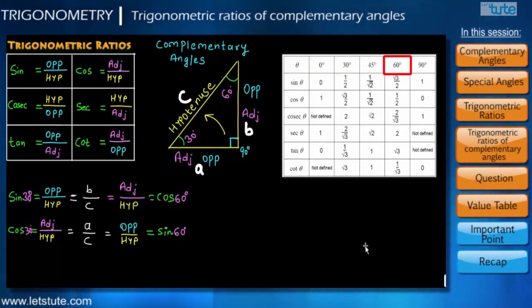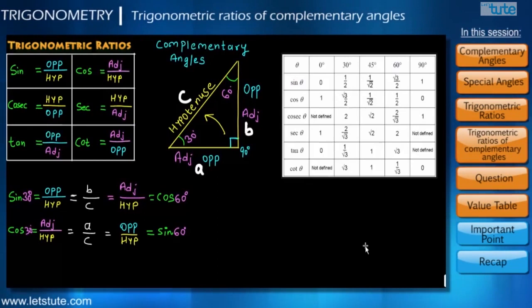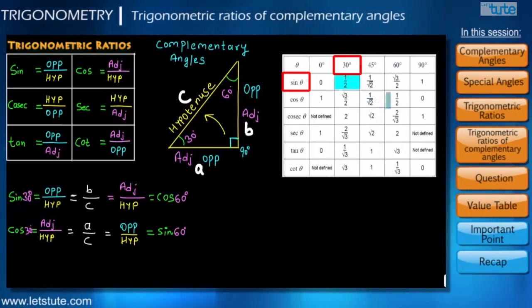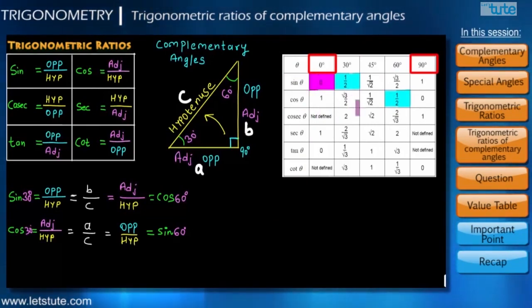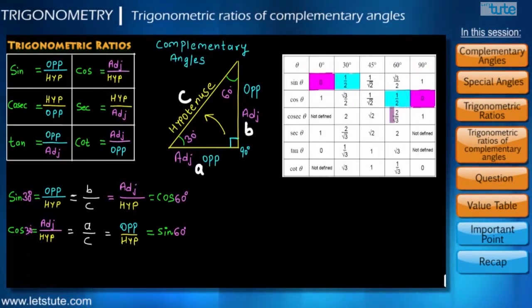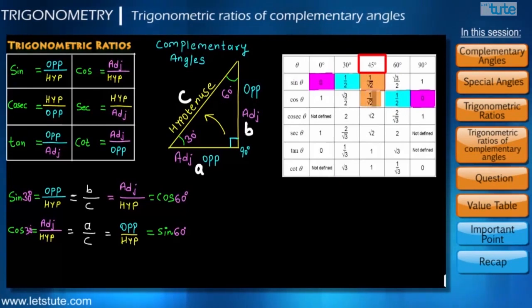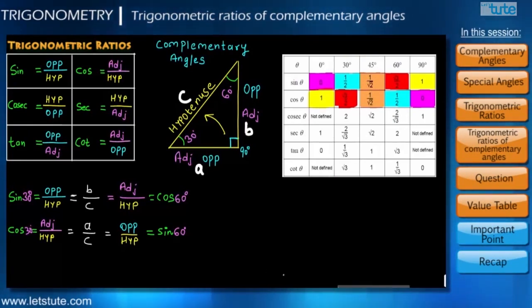Looking at the table, we can see the value of sin 30 is 1 upon 2, and therefore cos 60 degrees is also equal to 1 upon 2. Since 0 and 90 are complementary angles, the value of sin 0 is the same as cos 90, which equals 0. Similarly, sin 45 is the same as cos 45, which equals 1 upon root 2, and so on.